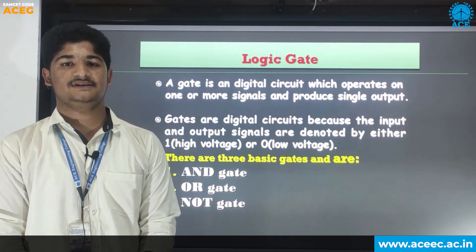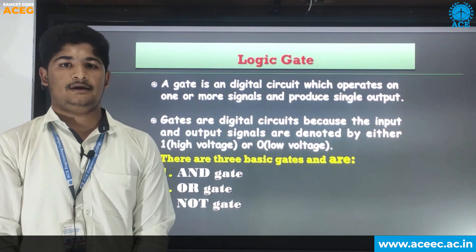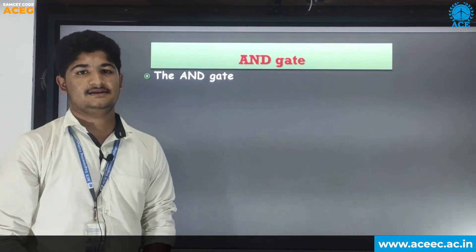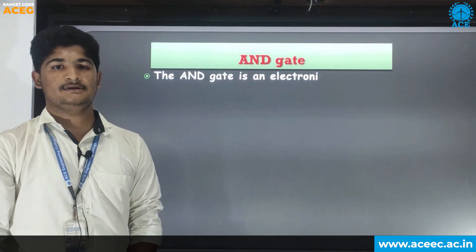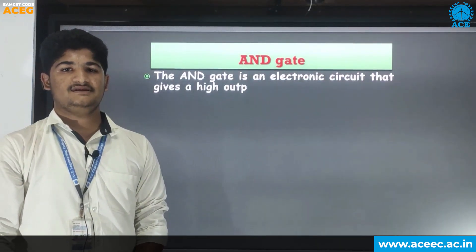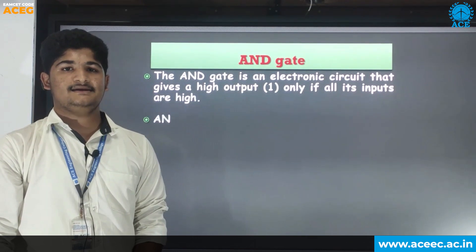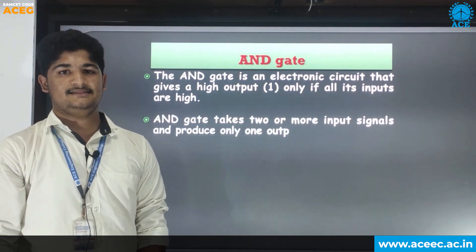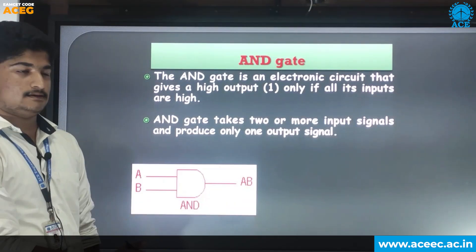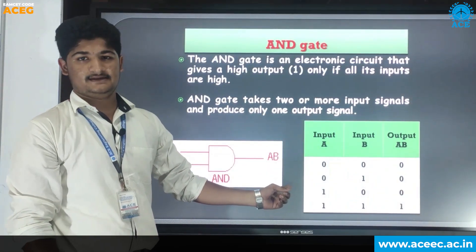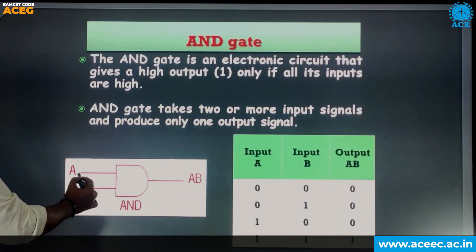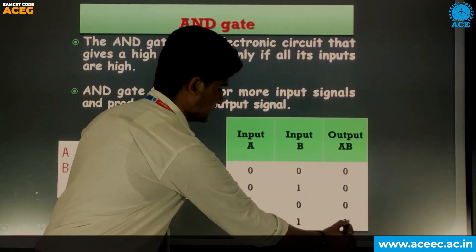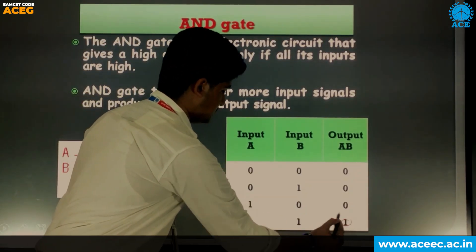Hi everyone, my name is Vishnu Vallabh. I am from third year CSCB. I am here to explain about the AND gate. The AND gate is an electric circuit that gives a high output only if all the inputs are high. The AND gate takes two or more input signals and produces one output signal. This is the diagram for the AND gate. This is the truth table for the AND gate. Here the inputs are A and B and the output is A dot B. The output is high only when both inputs are high.